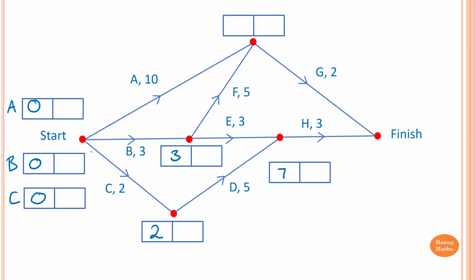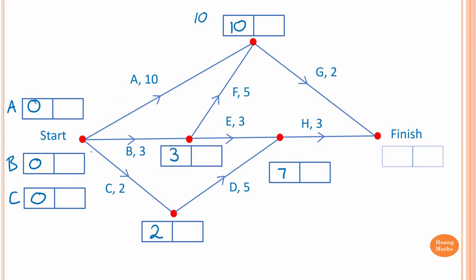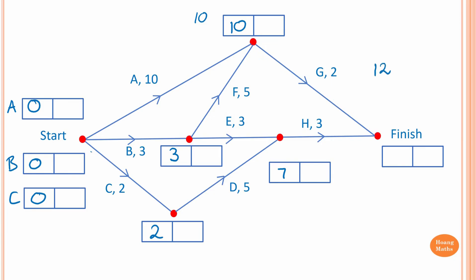To start on activity G, we need to complete activity A — that is 10 hours — and activity F as well. To complete activity F: 3 plus 5 is 8. But 10 is larger, so we take 10 hours. To finish the project, we need to complete activity G and activity H. To complete activity G: 10 plus 2 is 12. To complete activity H: 7 plus 3 is 10. Since G has not completed if we finish at 10, we make sure activity G is finished — so it's 12 hours.